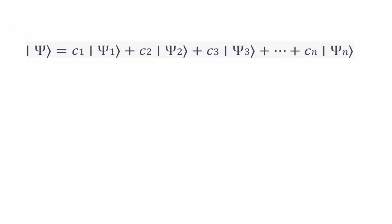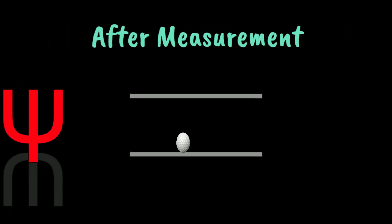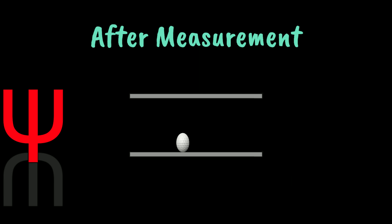And when a measurement is made, the wave function collapses to a single outcome corresponding to the measurement result, and the system behaves as a classical particle with a definite state.